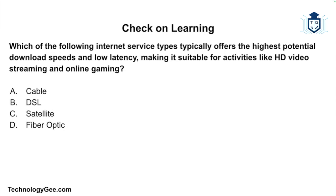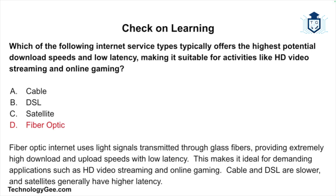Check on learning — Question 1: Which internet service type typically offers the highest potential download speeds and low latency, making it suitable for HD video streaming and online gaming? The options are cable, DSL, satellite, or fiber optic. The correct answer is fiber optic. Fiber optic uses light signals transmitted through glass fibers, providing extremely high download and upload speeds with low latency, ideal for demanding applications. Cable and DSL are slower, and satellite generally has higher latency.